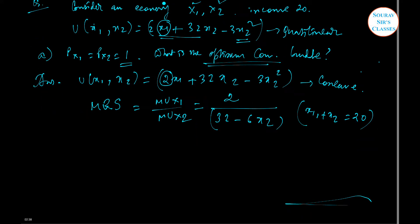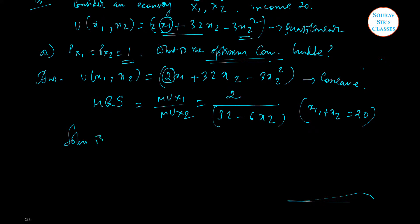Solution is not at the corner x2 equal to 0. It's not a corner solution because at this corner MRS will be 1 by 16, which is less than 1, that is the price ratio. Remember that MRS should be equal to the price ratio at the optimal case, so there is no corner solution. Therefore the consumer will benefit from spending some money on x2 as well.